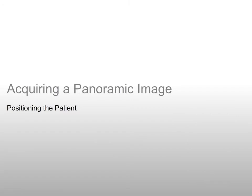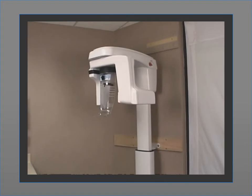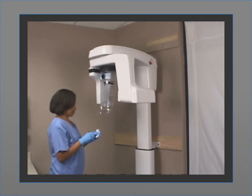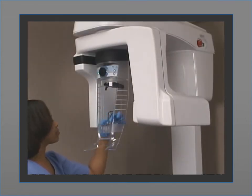Acquiring a panoramic image — Positioning the patient. The second step in acquiring an image with the CS8100 is to position the patient. Prepare the unit and patient, then use the optimized face-to-face positioning system. First, position the panoramic chin rest and make sure it clicks into place firmly. Fit the bite block to the panoramic chin rest, cover it with a plastic hygienic barrier, and ensure that the bite block is completely covered.